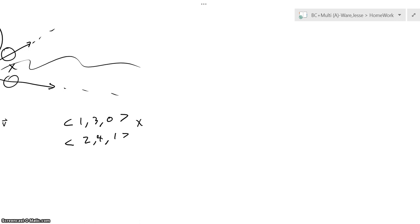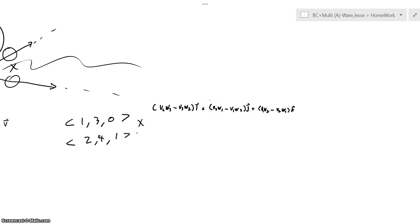Alright from here we take the cross product. Which I remember it just using kind of memorization. But it ends up being V2 to W3. And I'll write this out. So it's all that right there.